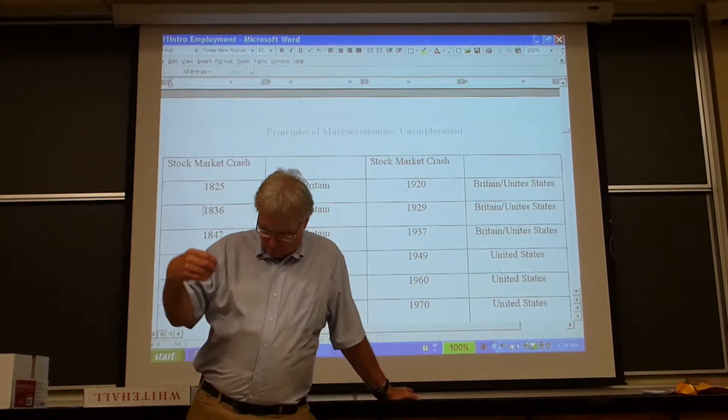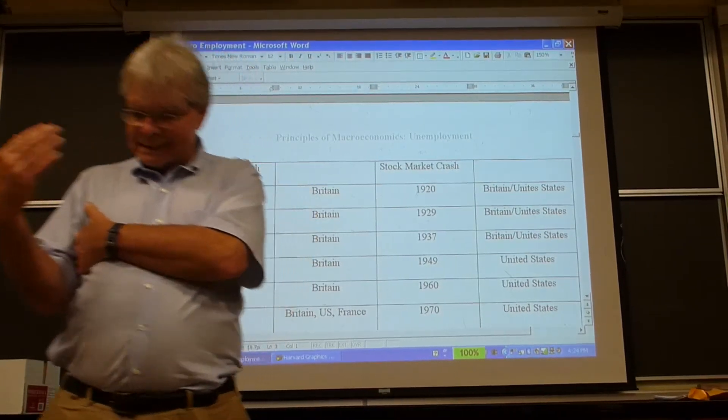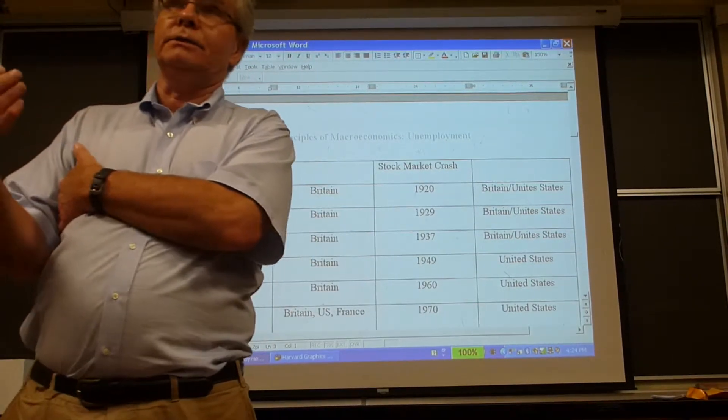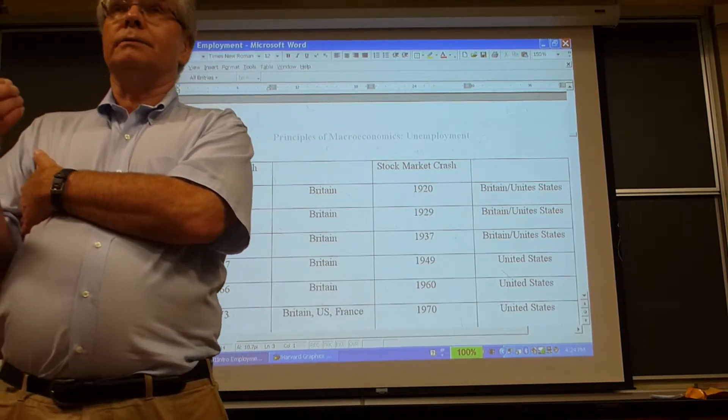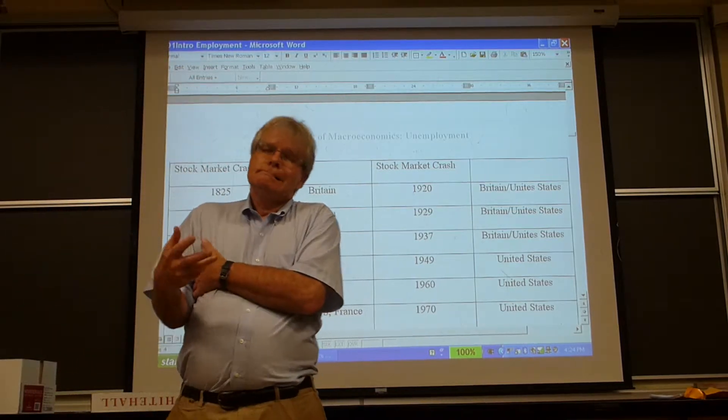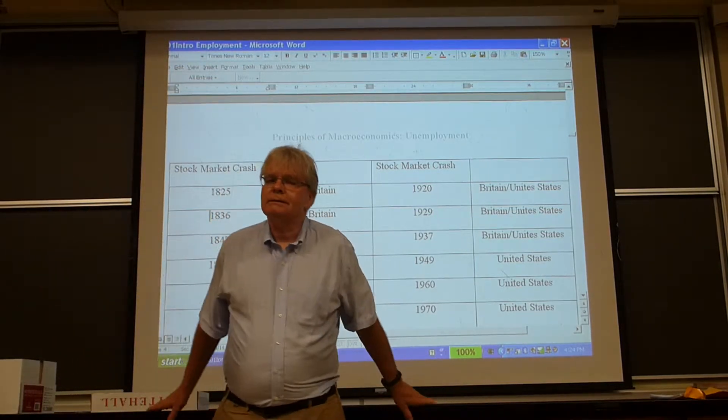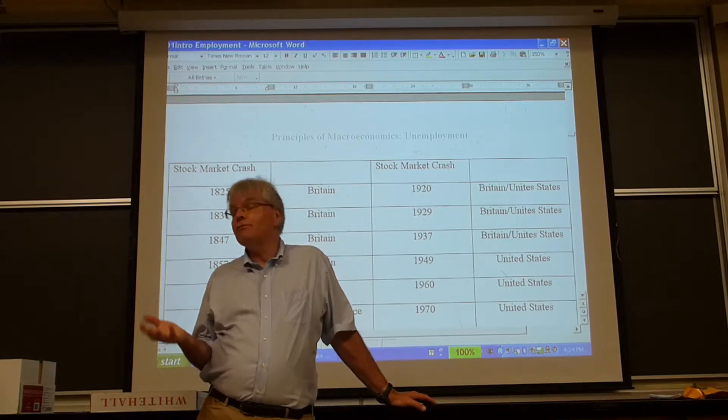So basically, in Western Europe and the United States, there's pretty well synchronized what we call the major recessions. Every 10 years there's a major recession, approximately every 9 or 11 years. You'll see there's two exceptions where there's seven years, but they might be explained by other things. Essentially, that's kind of remarkable.